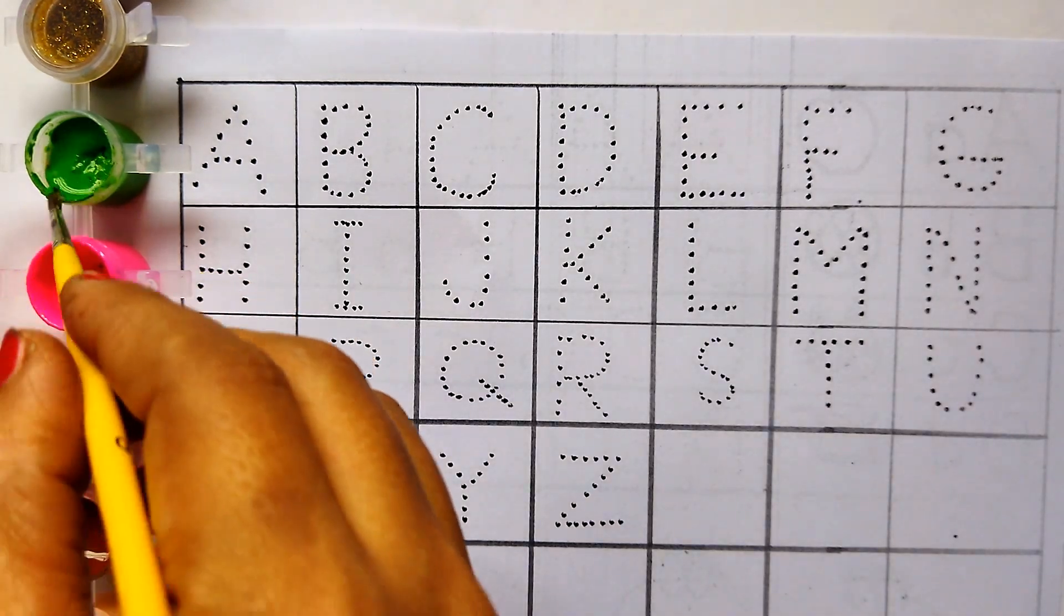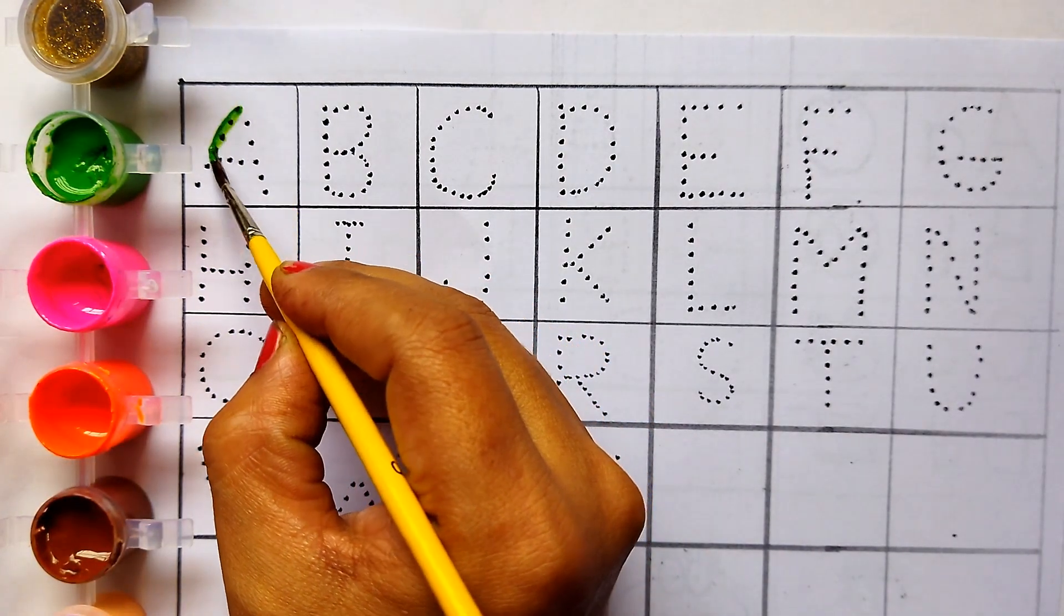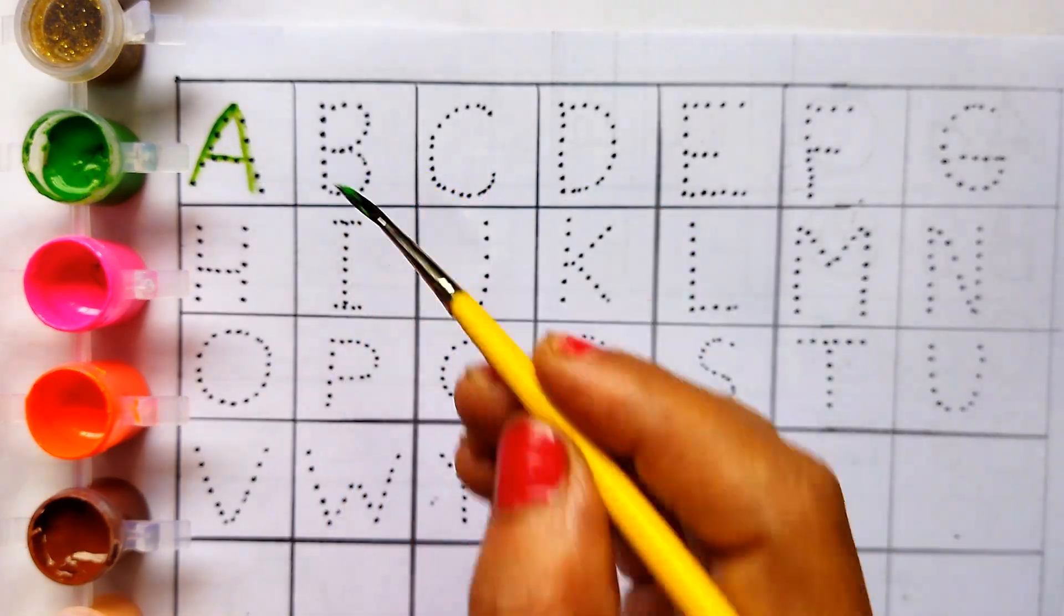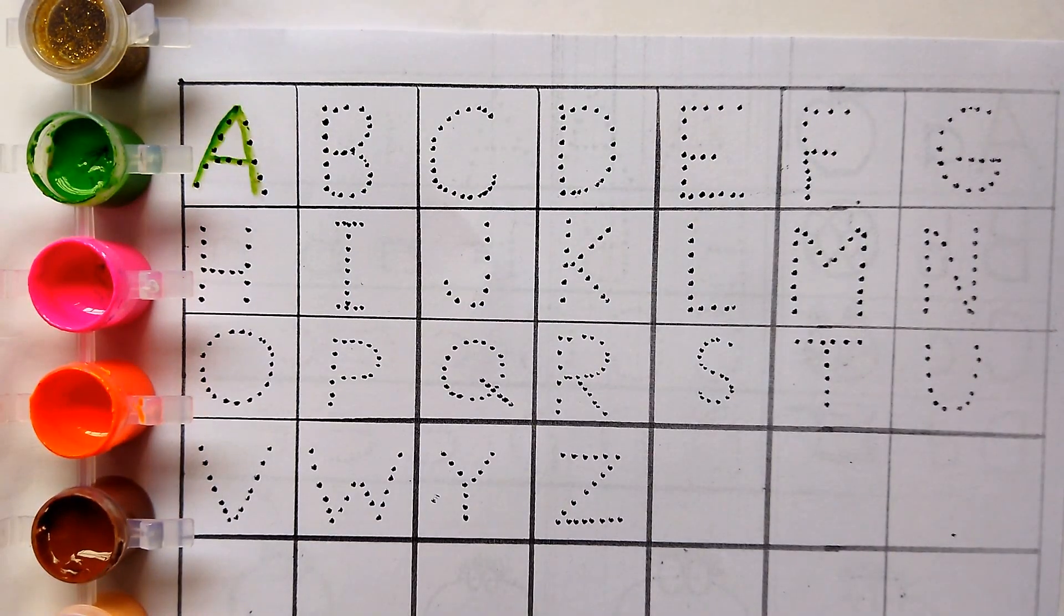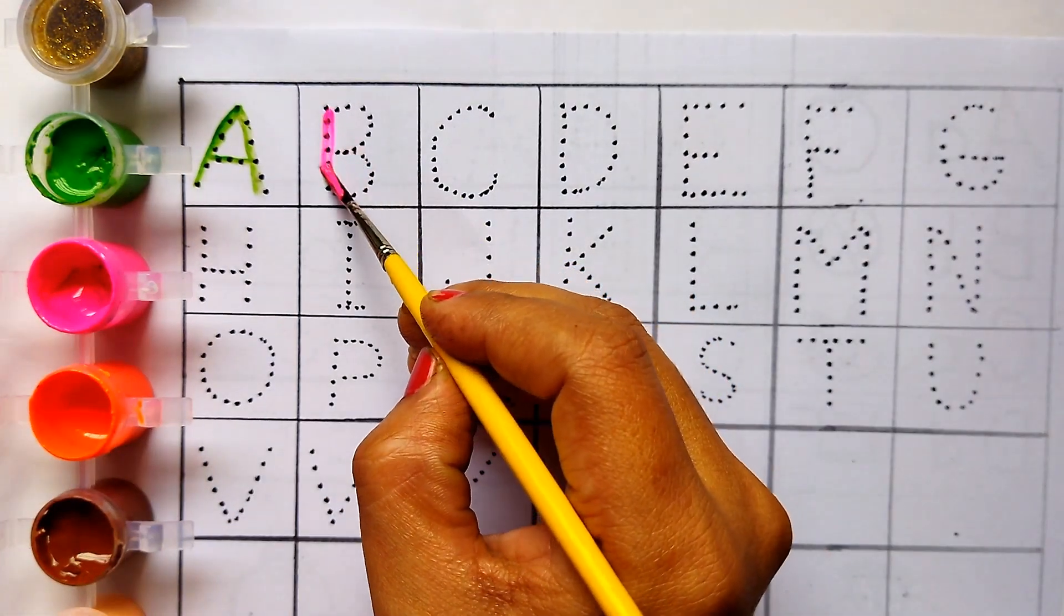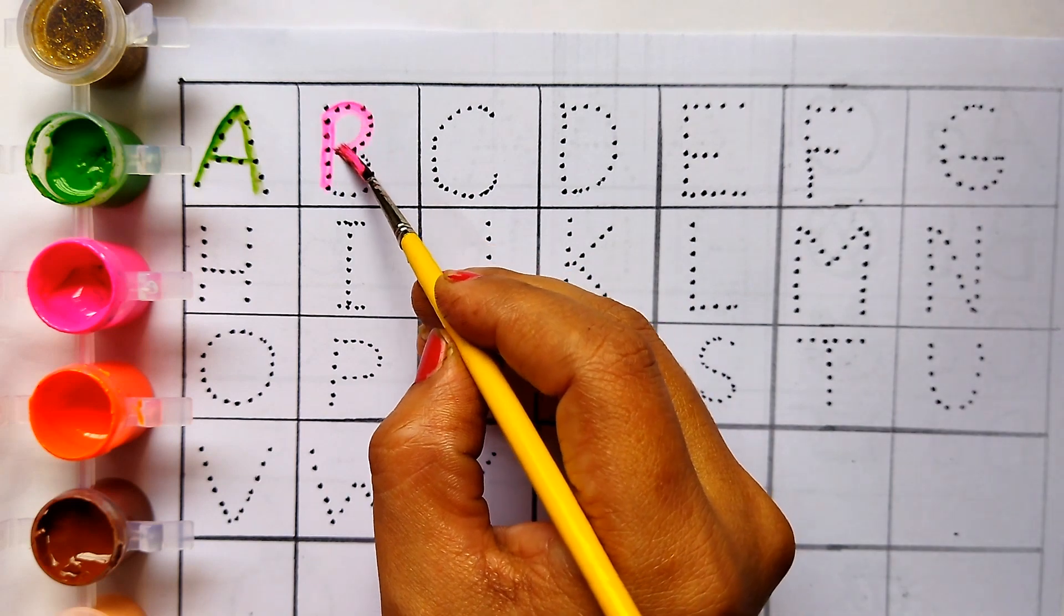Green colour A. A for apple. Pink colour B. B for ball.